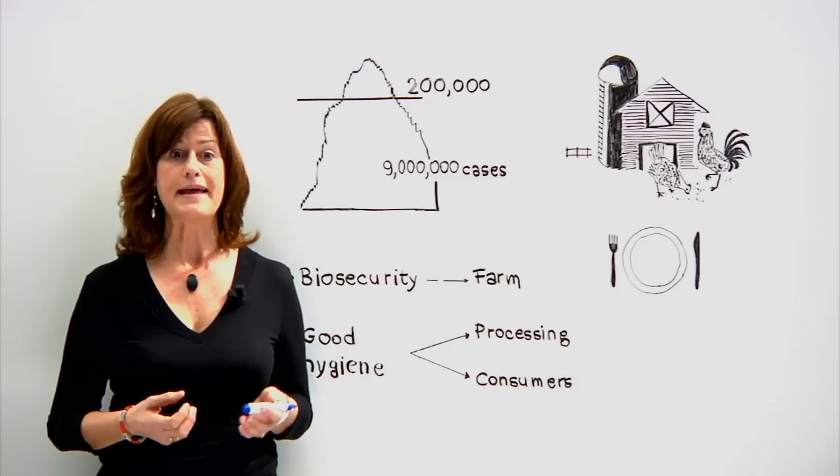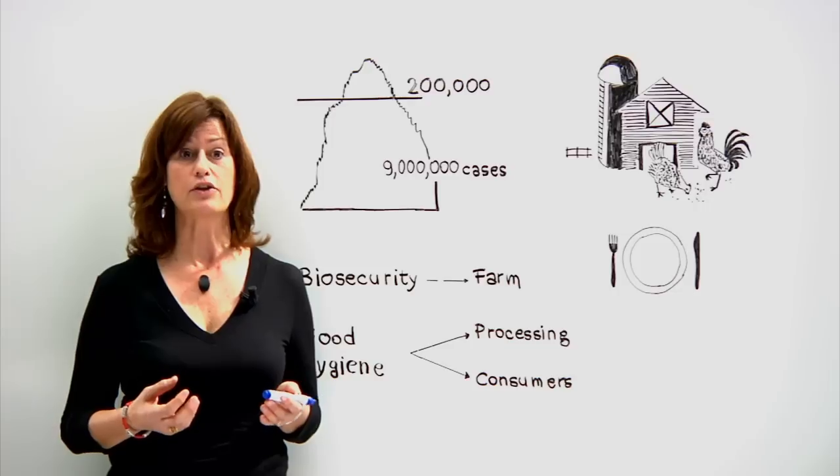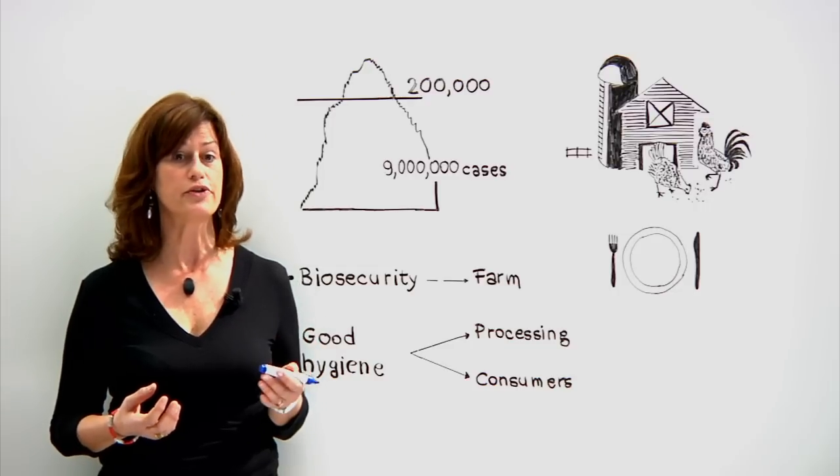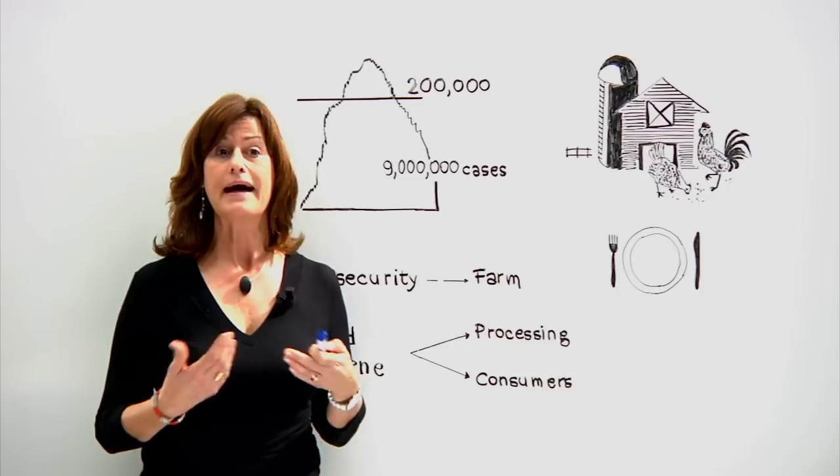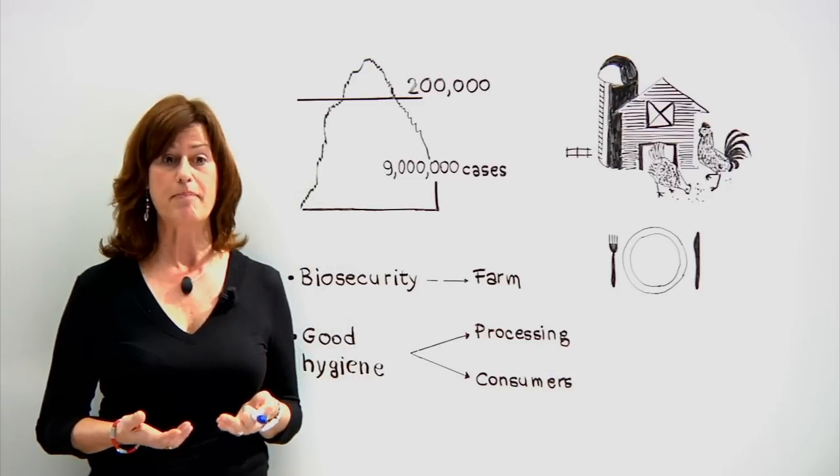Campylobacter is a bacteria that lives in the gastrointestinal tract of animals, particularly birds such as chicken and other poultry like turkey, and can cause a disease called Campylobacteriosis.